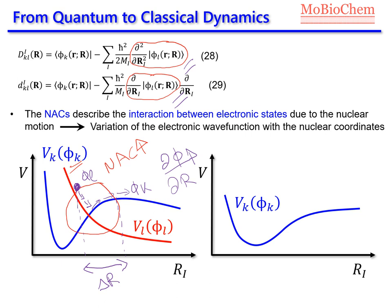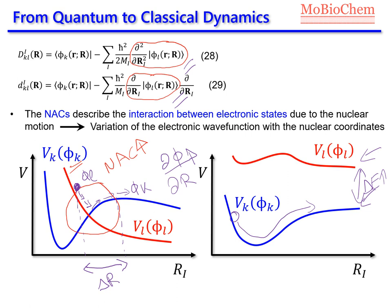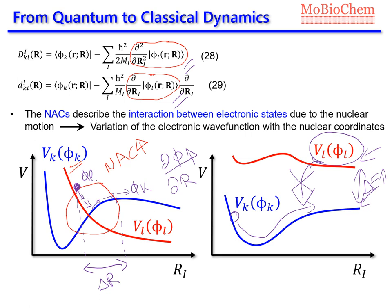However, if we have another situation where electronic state k is well separated from electronic state L — so delta E is relatively large — then the effect of electronic state L on the dynamics of state k is not important. We can assume the non-adiabatic couplings are equal to zero or very small. In other words, we can use the Born-Oppenheimer approximation, where we assume the system is running on a single electronic state with no interaction with other electronic states.